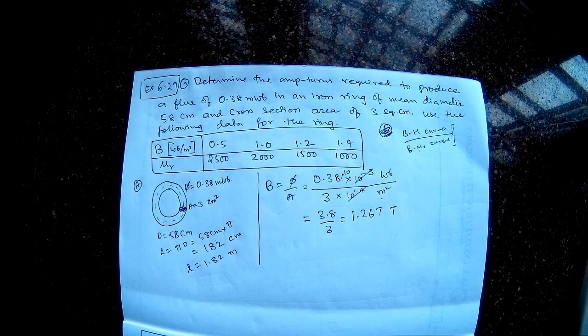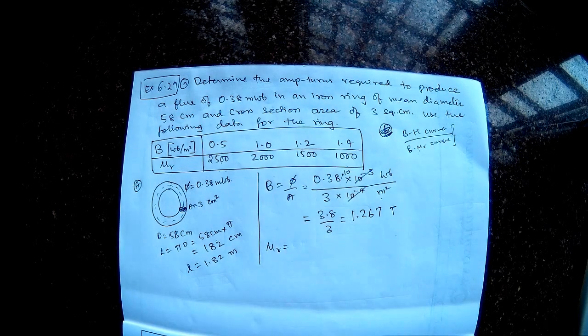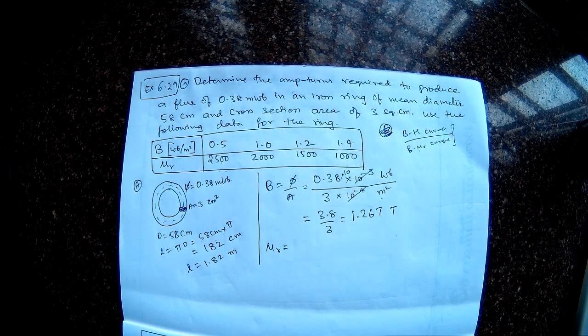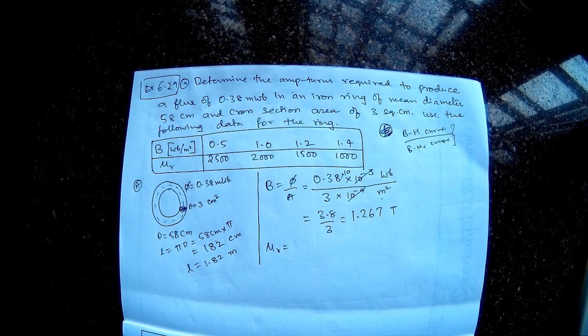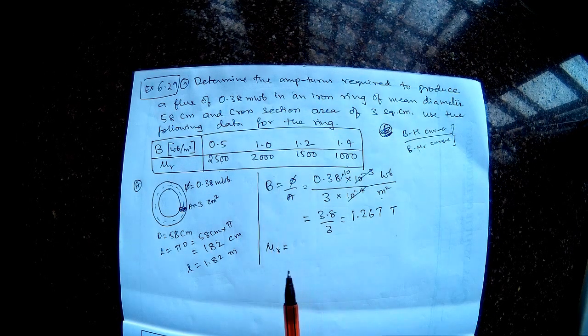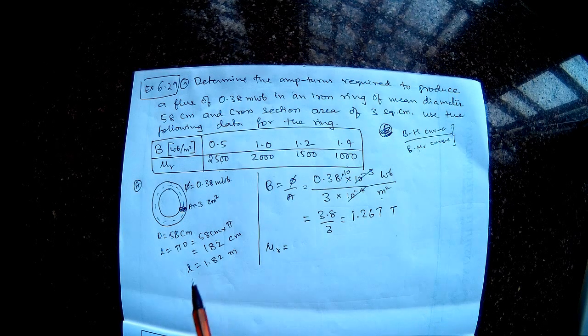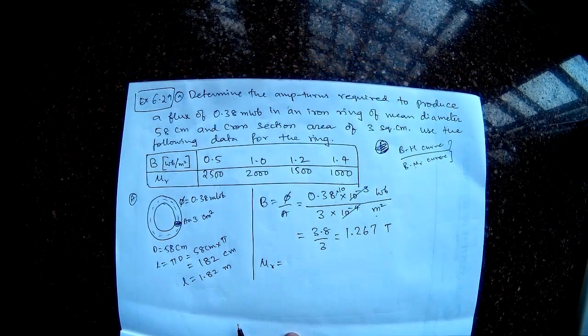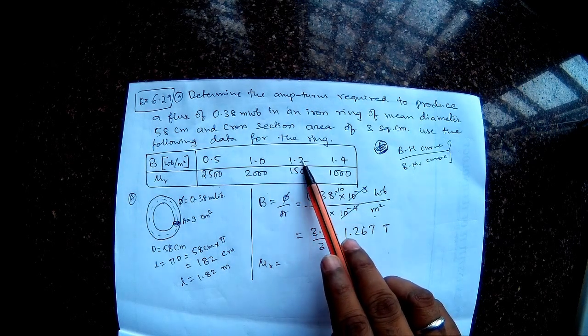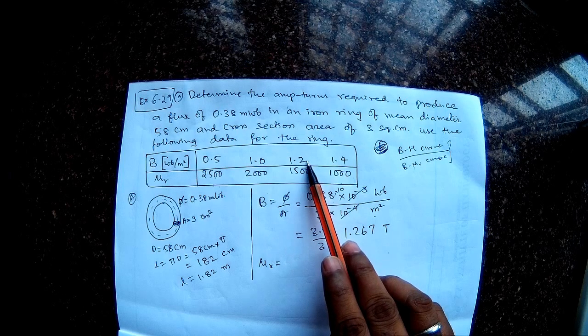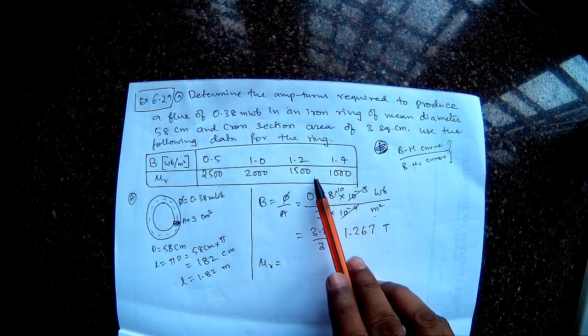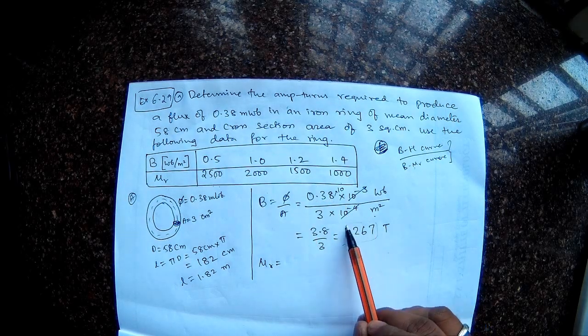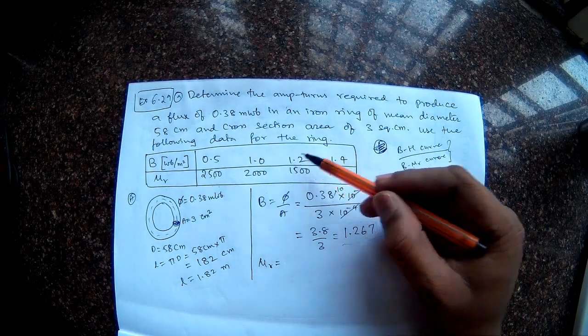Now given this flux density, I want to find out what is the mu R of the material. Because what is the overall objective? The objective is to find the ampere turns. So to find the ampere turns I can find the flux density, from flux density I will find out the field intensity H, and from field intensity multiplied by the length I will find the ampere turns. So that is my plan. So first let's find out what is mu R. Now if you closely look at the table, for 1.2 flux density the mu R is 1500, and as the flux density increases to 1.4, the mu R reduces to 1000.